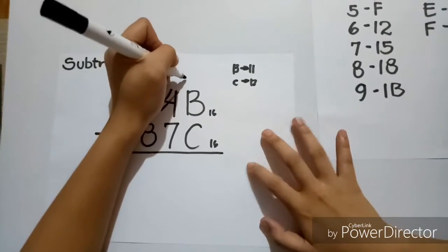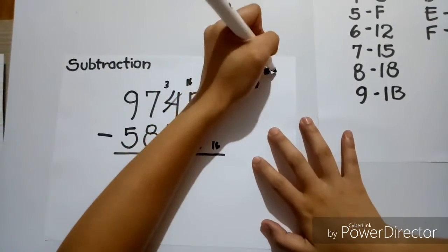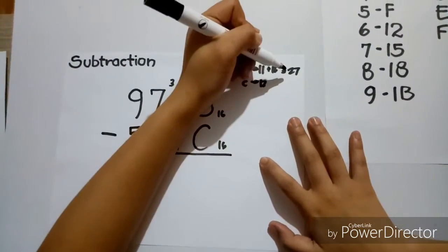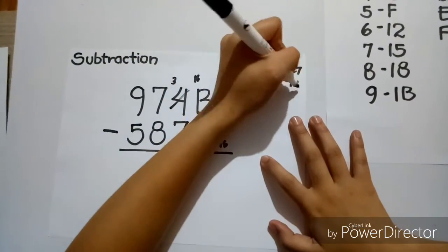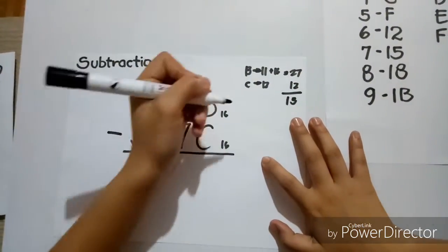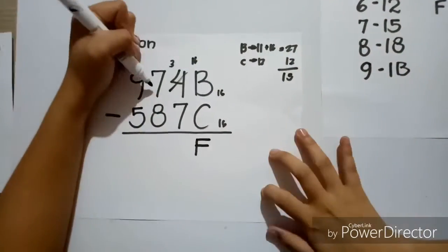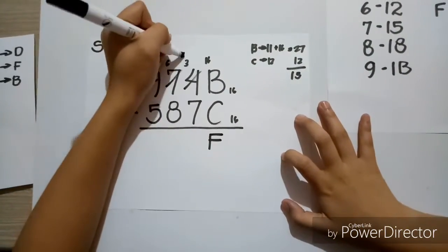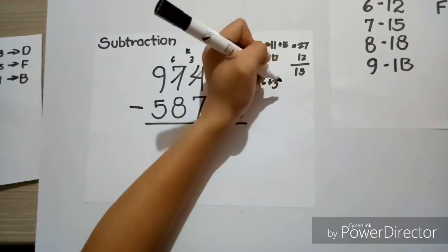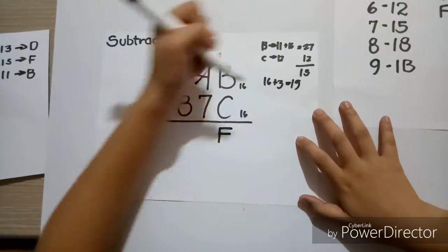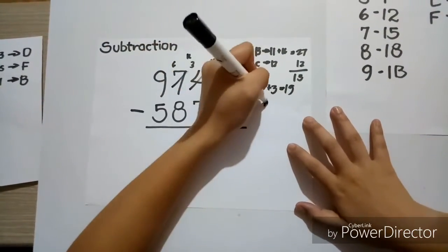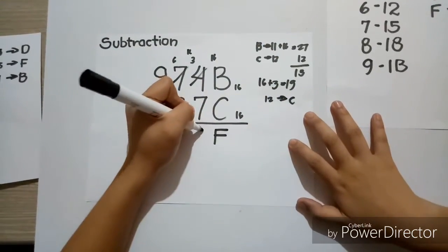And since 1 is equal to 16, so 16, 11 plus 16 is equal to 27. And 27 minus C, which is 12, is equal to 16, which is represented by F, so we'll write F. Then, we cannot subtract C from 3, so we'll have to borrow. And 16. Now, 16 plus 3 is equal to 19. And then C minus 7 is equal to 12. And 12 is represented by F, so we'll have to write F.